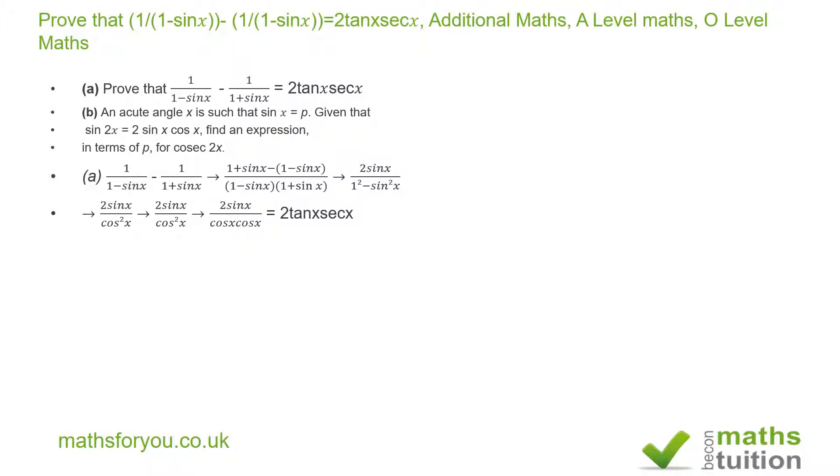Now for part b, we are told that we know sin 2x is equal to 2 sin x cos x, and we are told that sin x is equal to p. So what we need to do is make sure that all of that can be expressed in terms of sin x. What comes to mind is that cos squared x plus sin squared x is 1.